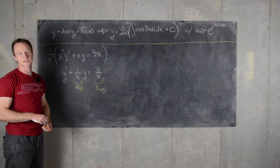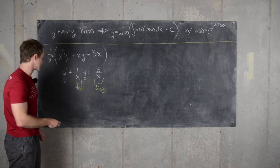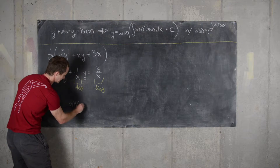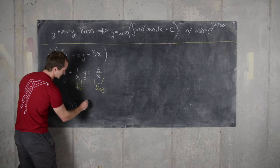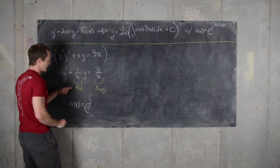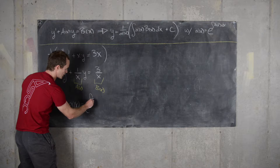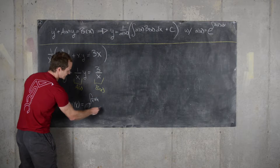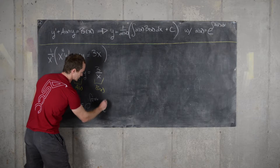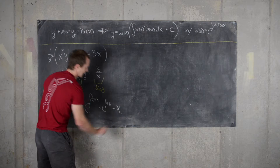So the first thing we need to do is calculate alpha of x. We have alpha of x equals the exponential of the antiderivative of a of x, which is 1 over x dx. That gives us the exponential of the natural log of x, which is just x.